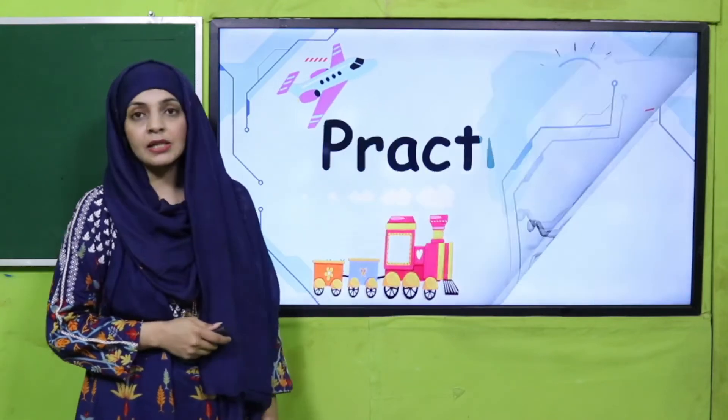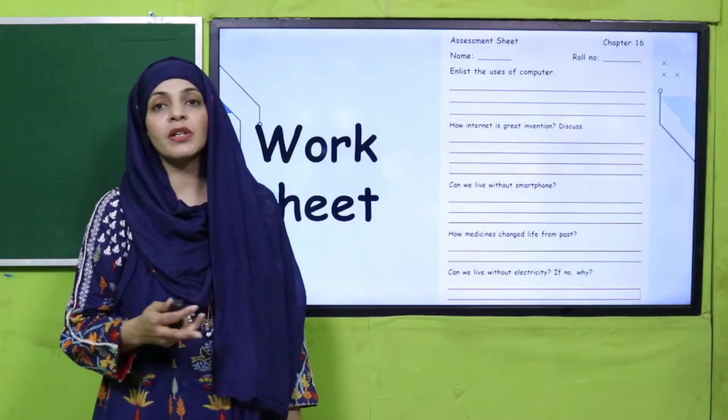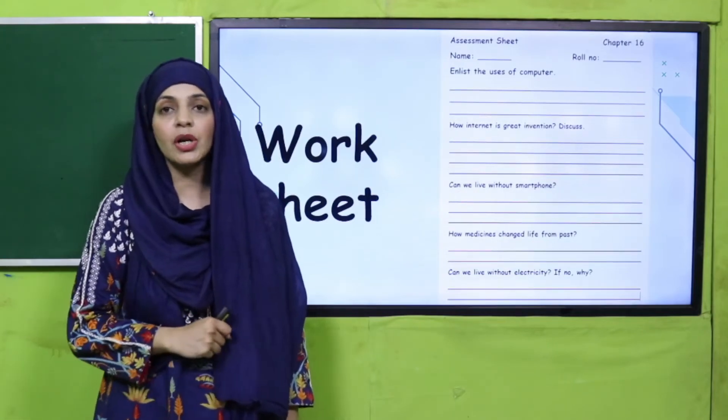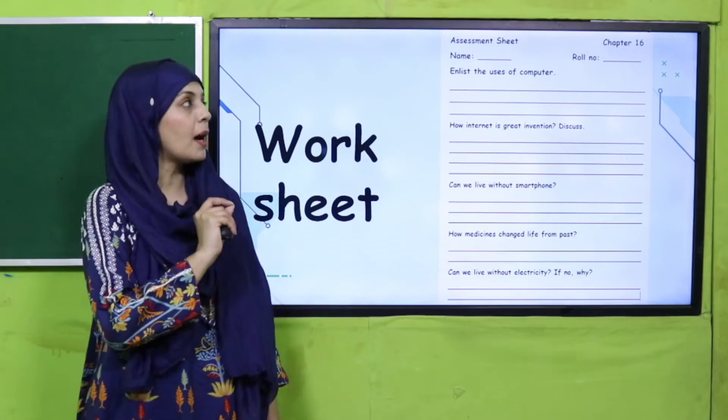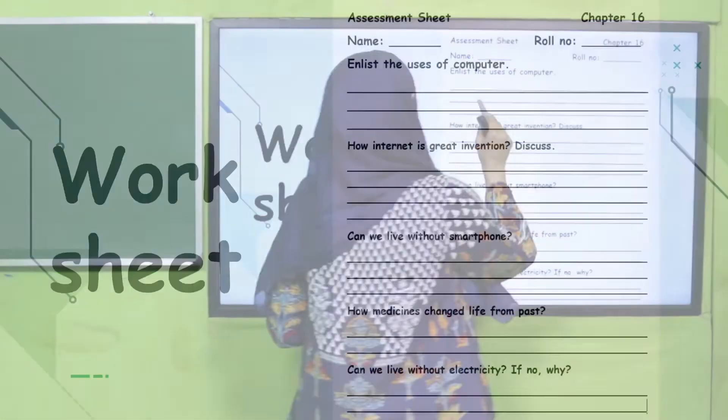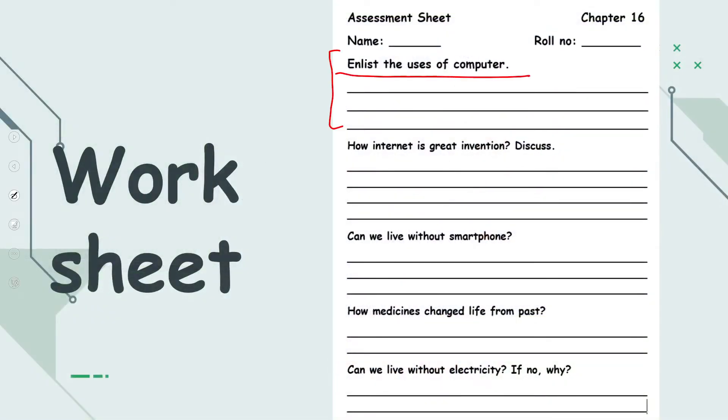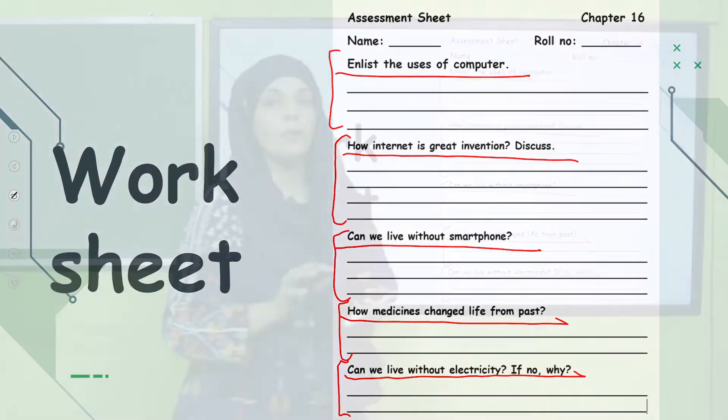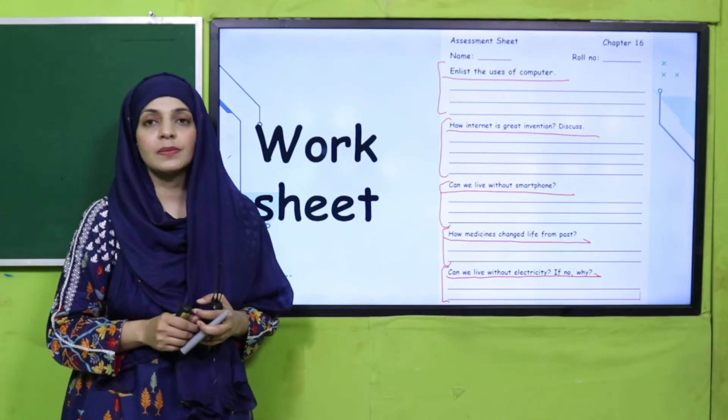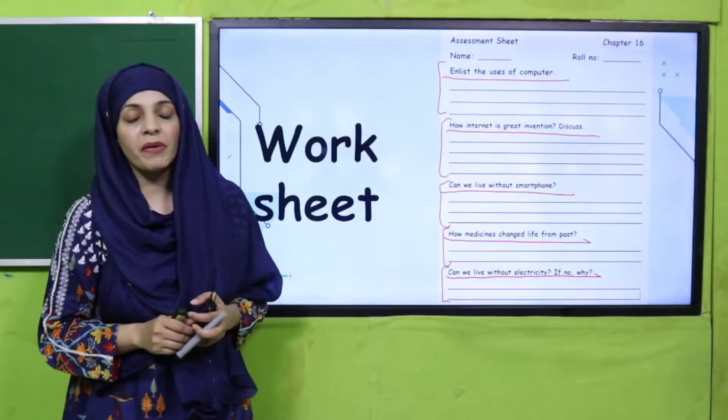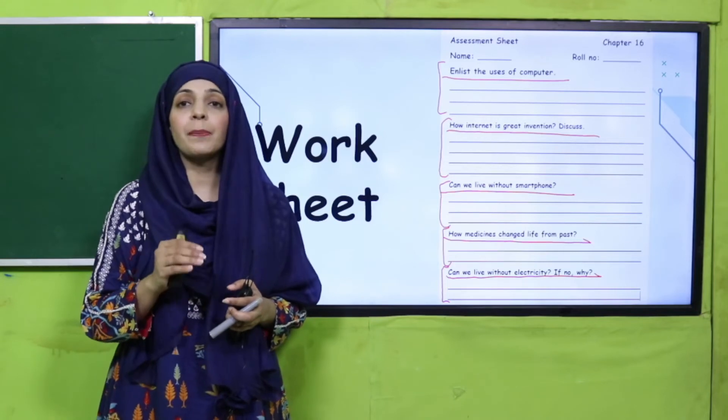Now let's quickly move forward towards the practice for which you can download this worksheet from the description box below this video or you can get it in print form by a teacher. Yeh aapka test hai. Aap ne apna naam likhna hai, roll number likhna hai and then start working on it. Enlist the users of computer. Computer ki kya users hain? Koi se do ya teen aap ko likhne hain. How internet is great invention? Discuss. Can we live without smartphone? How medicine changed the life from past? Can we live without electricity? If no, why? So my dear students, you will pause the video and quickly finish the worksheet. I hope everybody has done it. So my dear students, aapne grading aur marks ke liye worksheet ko apne teacher ko submit karwana hai.